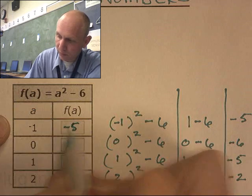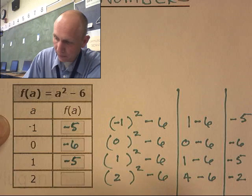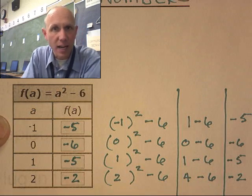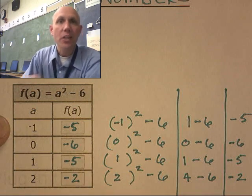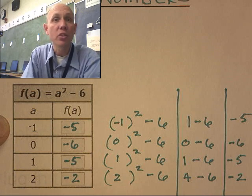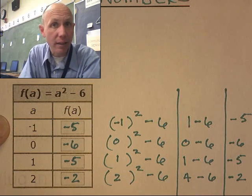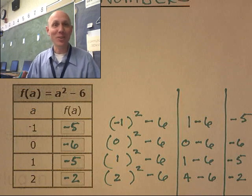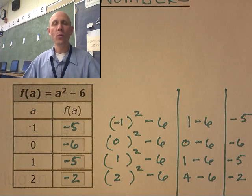Our answers are: negative 5, negative 6, negative 5, negative 2. Slow it down. Write it down. What do you have to be able to do? You have to be able to square a number and subtract 6 — that's easy math. Just slow it down. In through the nose, out through the mouth. Slow it down.